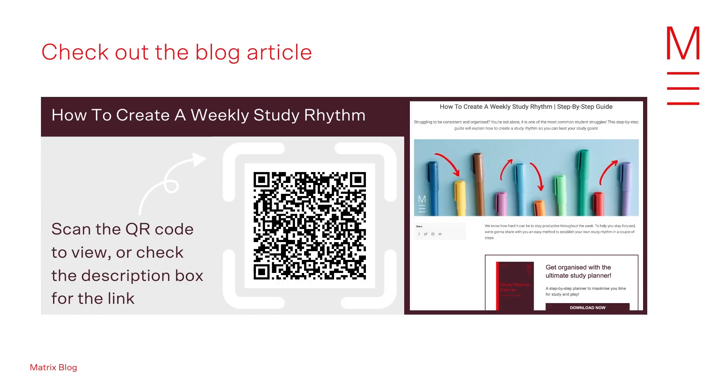The first step in achieving this change is producing a weekly rhythm — a timetable of sorts, a list of practices, activities and things you need to do on a regular weekly basis, allocated by day and time, addressing the times you are not at school. If you want help producing one, read our article 'How to Create a Weekly Study Rhythm.' It provides a step-by-step process for building a study rhythm, and there's also a free template you can download.